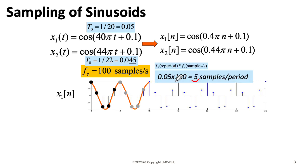And this makes sense. I have 0.05 seconds per period. And if I multiply that by the sample rate, which is samples per second, then this seconds here cancels with this seconds here. And I wind up with something in units of samples per period.